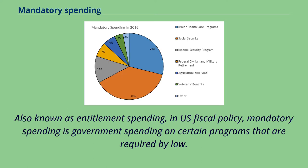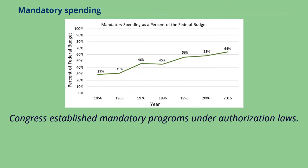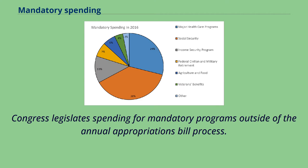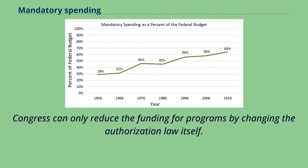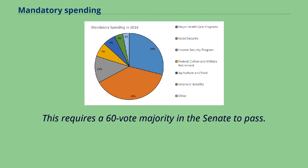Also known as entitlement spending, in U.S. fiscal policy, mandatory spending is government spending on certain programs that are required by law. Congress established mandatory programs under authorization laws, and legislates spending for these programs outside of the annual appropriations bill process. Congress can only reduce the funding for these programs by changing the authorization law itself, which requires a 60-vote majority in the Senate to pass.